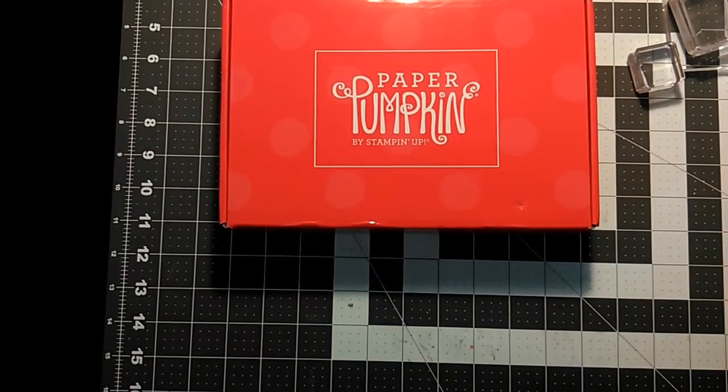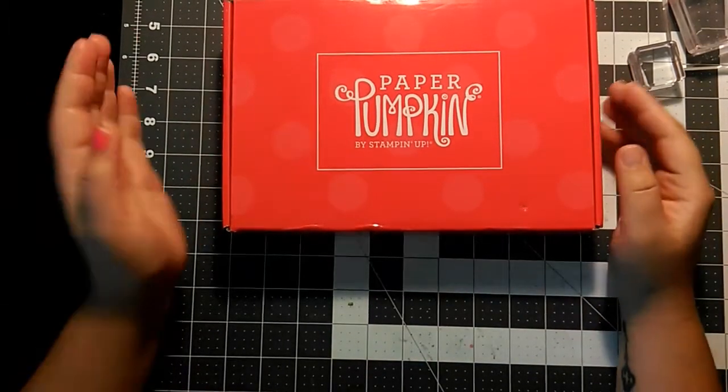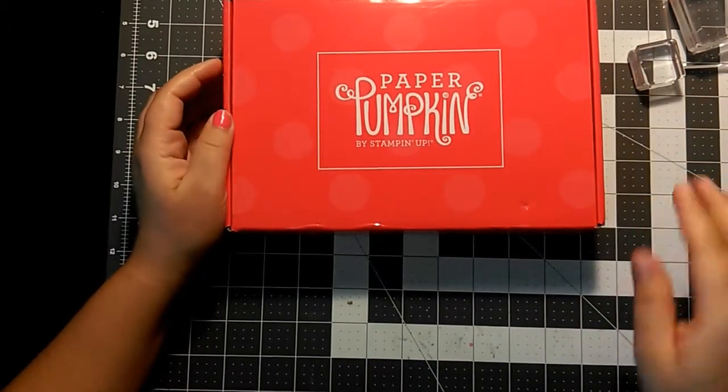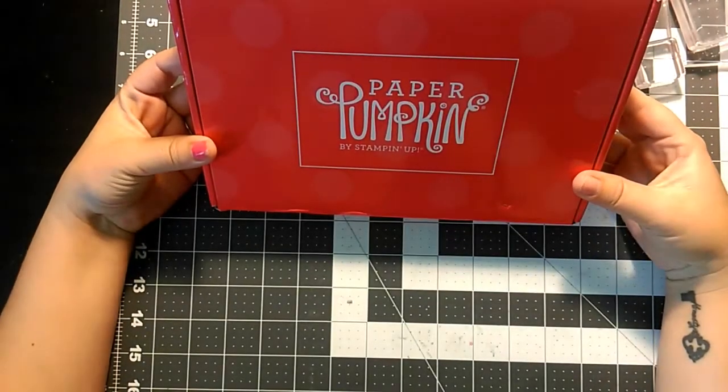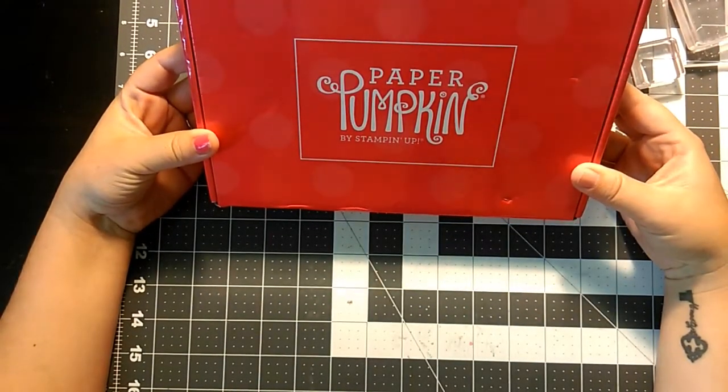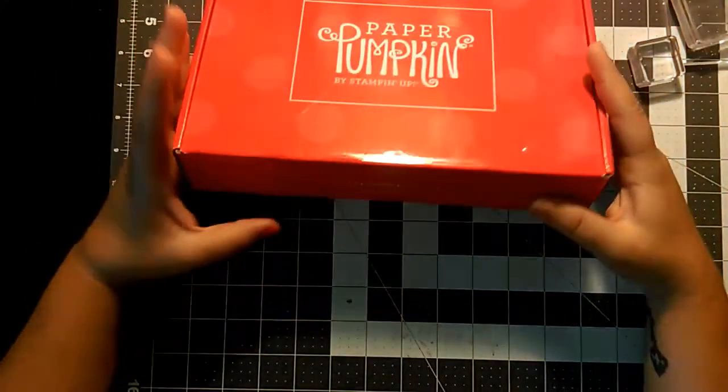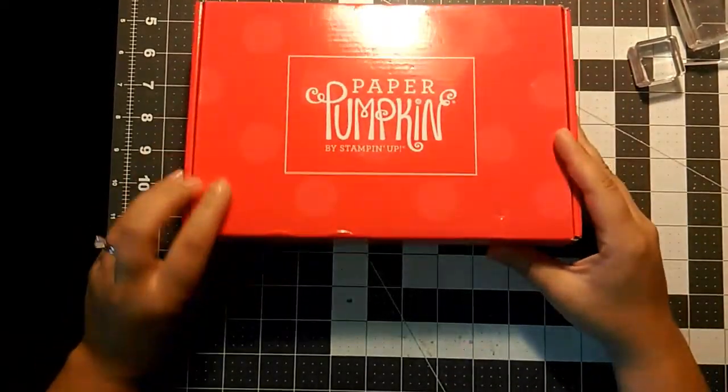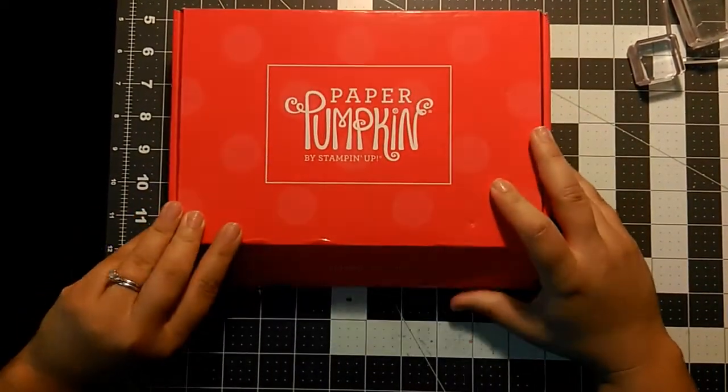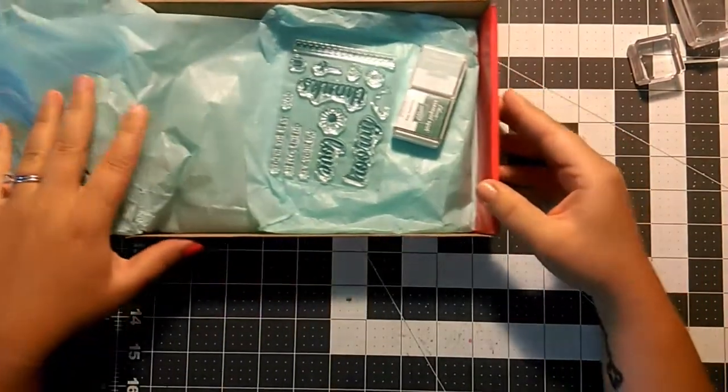Hi everyone, welcome back to my channel. This is Veronica with Wanting Girl Crafts. Today I'm doing the July Paper Pumpkin unboxing to show what came in this month's subscription. I've already pre-opened it to make it easier to take a look and see what's inside. So here we go.